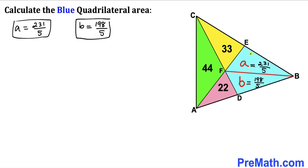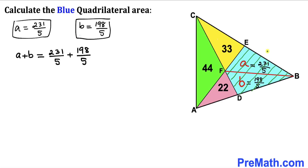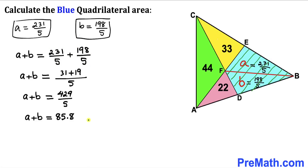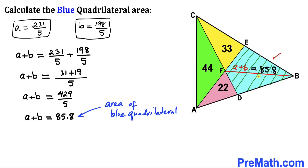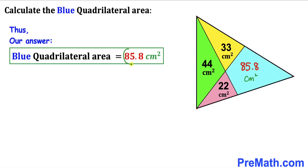So the area A is 231/5 and the area B is 198/5. The combined area of the blue quadrilateral is A + B = 231/5 + 198/5 = 429/5 = 85.8 cm². Thus, the area of the blue quadrilateral is 85.8 centimeters square. Thanks for watching and please don't forget to subscribe to my channel for more exciting videos.